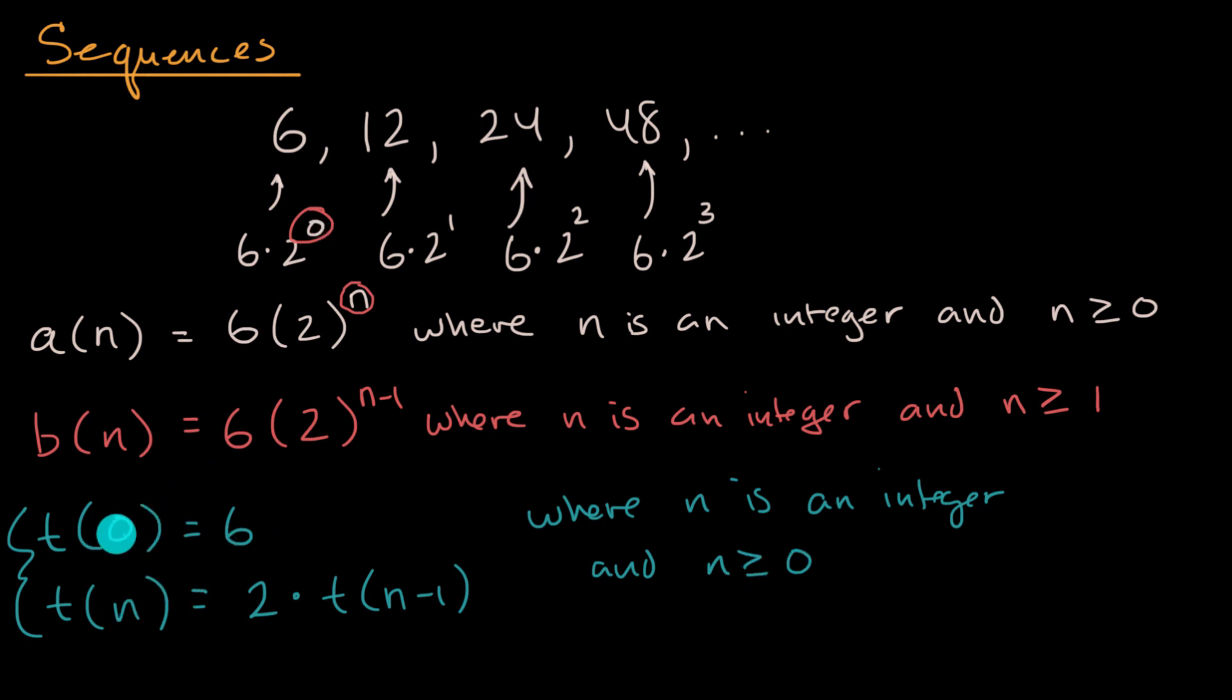When you put n equals zero here, you'll get that term. When you get n equals one, t of one is going to be two times t of one minus one, t of zero. In that case, it would be two times t of zero is six. So two times six, it would get you 12.